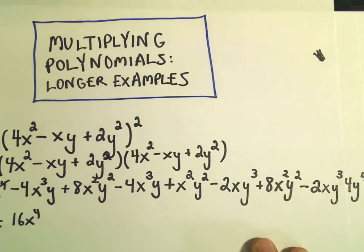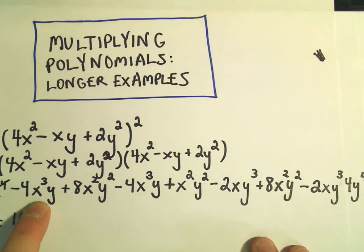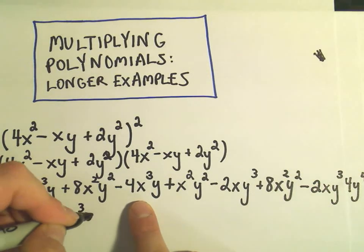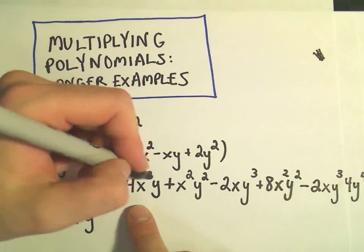So that'll take care of the first term. Then we have a negative 4x³y to the first. It looks like we have another 4x³y to the first. So that'll give us negative 8x³y to the first. So those are like terms.